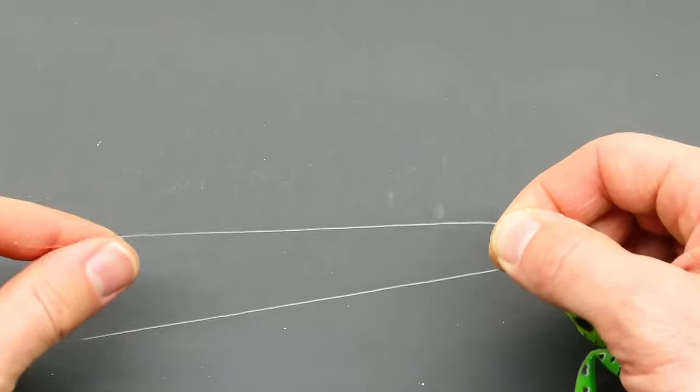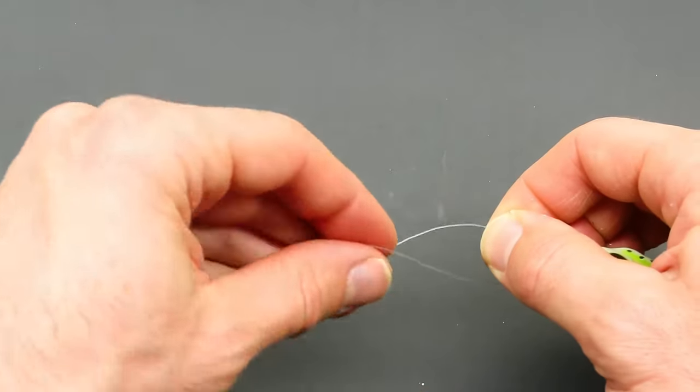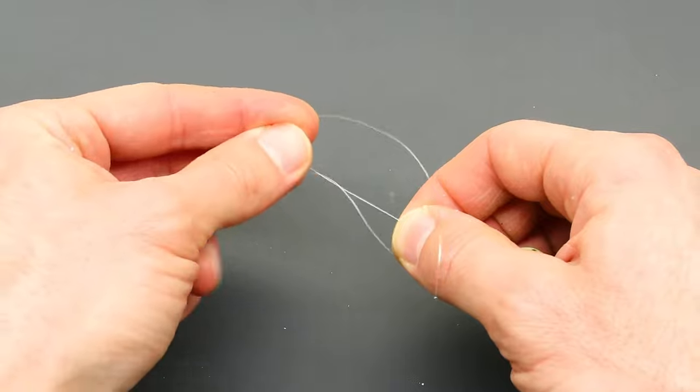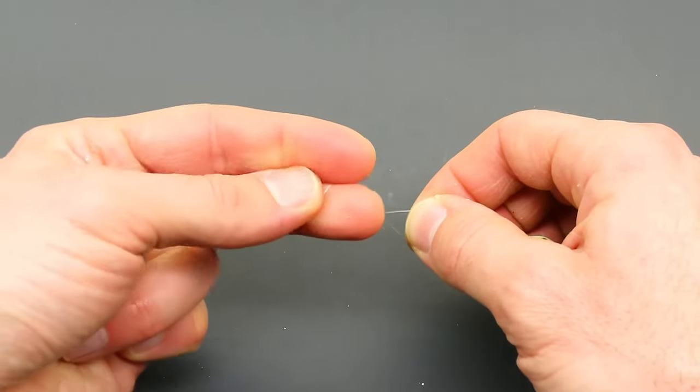Bring about 5 inches of line through and then pass the tag end underneath the main line. Start wrapping it five or six times around the main line.